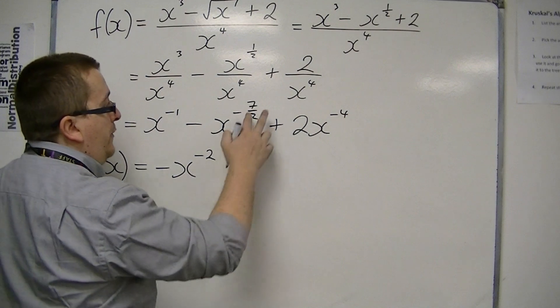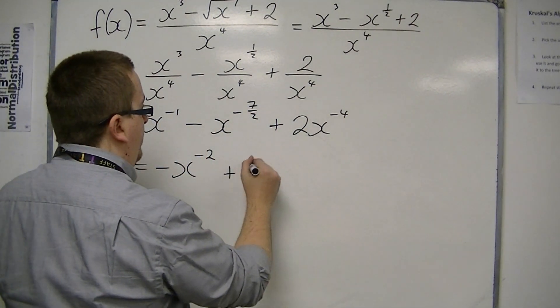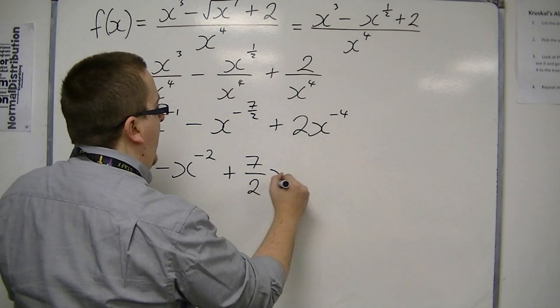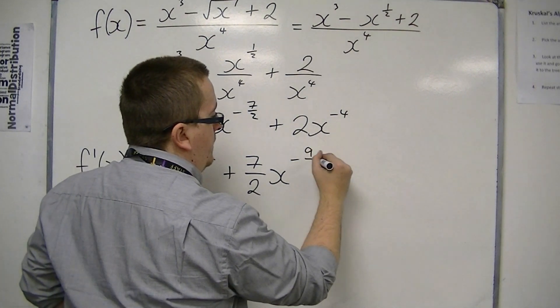Then the power comes down to the front. So I've got minus 7 halves times minus 1 is plus 7 halves x. And then I need to take 1 from minus 7 halves, which is minus 9 halves.